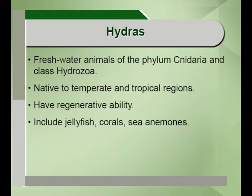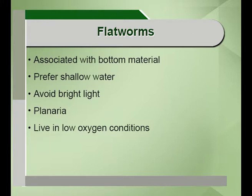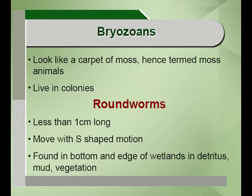Hydra belongs to the phylum Cnidaria and class Hydrozoa. They are native to temperate and tropical standing wetland ecosystems, have a regenerative ability, and include sea anemones, corals and jellyfish. Flatworms are associated with bottom material; examples are planaria and they live in very low oxygen conditions. Bryozoans live in colonies and look like a carpet of moss, hence termed moss animals. Roundworms or nematodes are less than one centimeter long, can be pink or reddish in color, move with an S-shaped motion, and are found in the bottom and edge of wetlands in detritus, mud and vegetation.